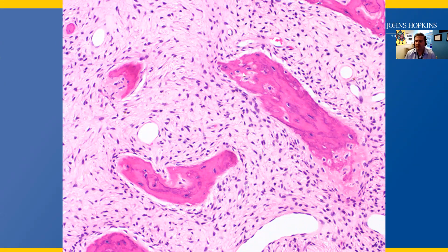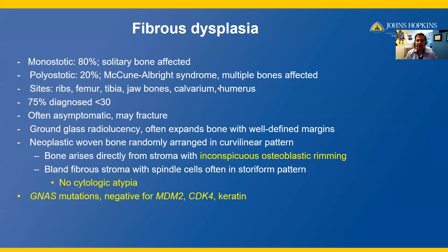This bone is not being produced by osteoblasts — we have a lack of osteoblastic rimming. So taken together, the histology and the radiology, we have a diagnosis of fibrous dysplasia. 80% of cases of fibrous dysplasia affects a single bone, which is monostotic. However, 20% of cases multiple bones are affected, a polyostotic variety.